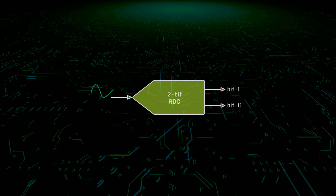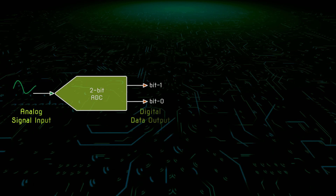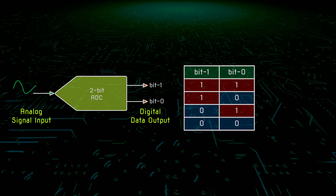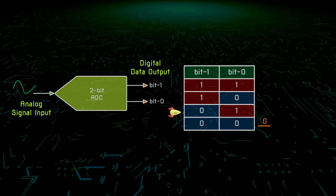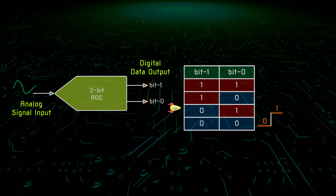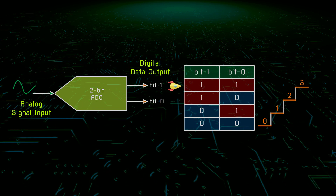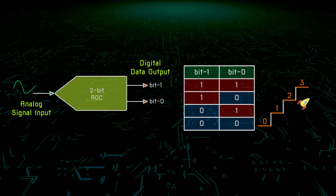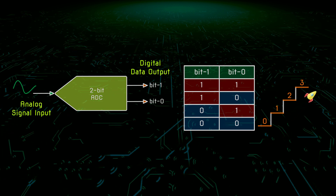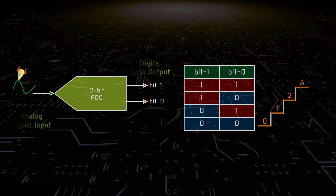Let's take a closer look at the 2-bit ADC. The 2-bit ADC has 4 different output values: 00 is 0, 01 is 1, 10 is 2, and 11 is 3. Only 4 steps are used here to represent the input voltage from the minimum value to the maximum value.